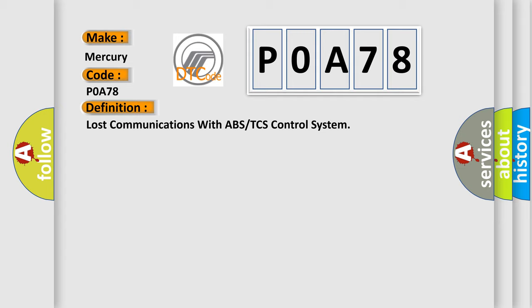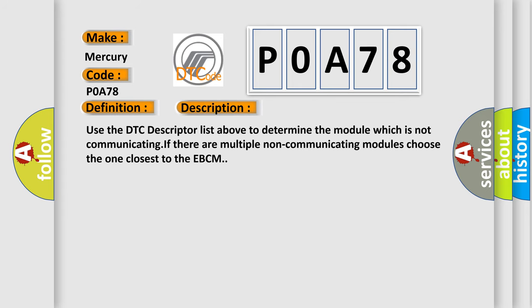And now this is a short description of this DTC code. Use the DTC descriptor list above to determine the module which is not communicating. If there are multiple non-communicating modules, choose the one closest to the EBCM.